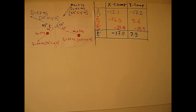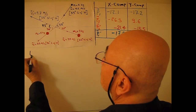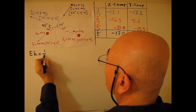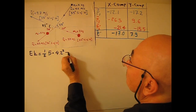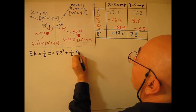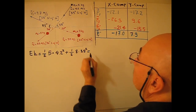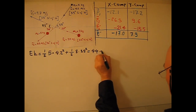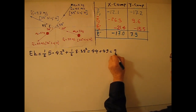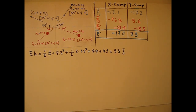The second question was: find if the collision is elastic or inelastic. We need to find the total kinetic energy just before the collision. Ek equals one-half times 5 times 4.2 squared, plus one-half times 8 times 3.5 squared. This gives 44 plus 49, equaling 93 joules. This is the total kinetic energy of the marbles just before the collision.